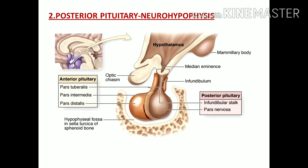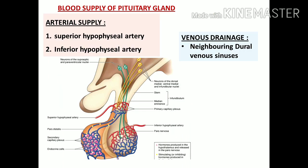The posterior pituitary is called the neurohypophysis because it shows similarity with neuronal structures. Histologically it consists of neuronal processes, axonal processes, and neuroglial cells. The posterior pituitary is also connected to the hypothalamus via the pituitary stalk or infundibulum. In fact, the posterior pituitary gland does not secrete any hormones itself — it simply stores hormones that are synthesized in the hypothalamus.